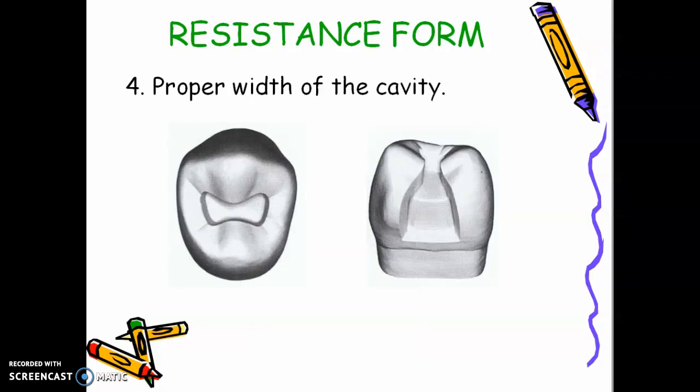Proper width of the cavity. If your isthmus or your dovetail is very narrow, then the amalgam will break during mastication. It will fracture during mastication. So ideally, your dovetail should be one-third of the intercuspal distance. Cusp tip to cusp tip, divide into three. So more or less, this is the width of your dovetail. Your isthmus, the narrowest portion of your cavity, is approximately one-fourth of the intercuspal distance.